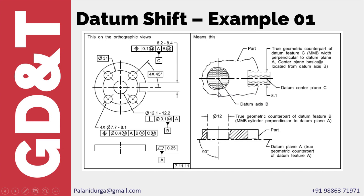If the hole size is more than 12.1 mm, then the part can shift by its axis. Similarly, to check the four hole positions, you have a pin of 12 mm and a two-parallel-plane block of 8.1 mm. How did we arrive at 8.1? It is 8.2 minus 0.1. If the slot size is 8.4, then the entire part can rotate along the datum axis in such a way that the high points touch the pad, and at that condition the position of the four holes is checked.